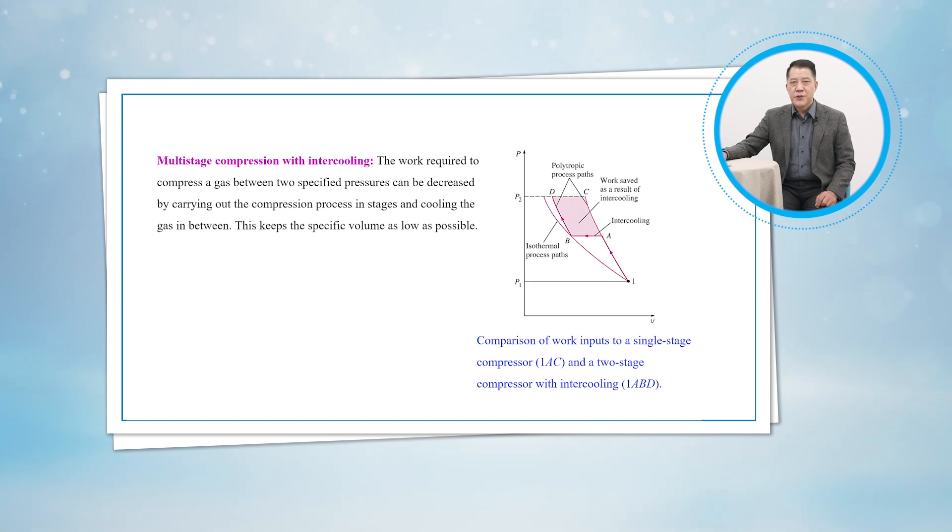It was shown in Project 9 that the work required to compress gas between two specified pressures can be decreased by carrying out the compression process in stages and cooling the gas in between—that is, using multistage compression with intercooling. As the number of stages is increased, the compression process becomes nearly isothermal at the compressor inlet temperature, and the compression work decreases.